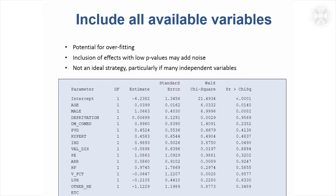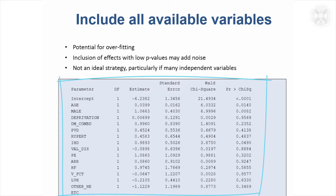If we first look at putting all the variables in — there are 25 — the problem is that quite a few have low p-values probably because they're correlated with other variables, masking their individual effects. They're likely just adding noise to the data, so this isn't a particularly good strategy when you've got a large number of variables.